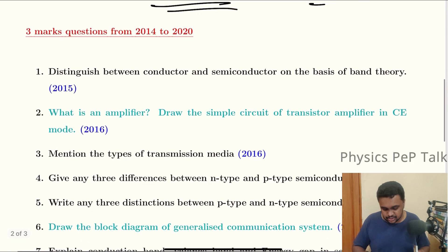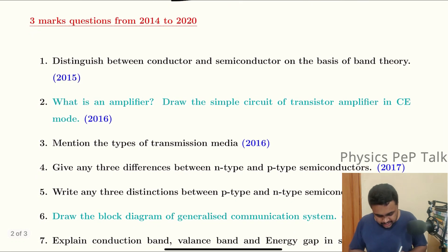Three marks question: Distinguish between conductors and semiconductors on the basis of band theory. Conductors: the valence band and conduction band are the same. The conduction band is completely filled at room temperature. Semiconductors: the valence band and conduction band are separated by an energy gap. At room temperature, some of the valence electrons go to the conduction band. This energy gap can be overcome by connecting to a small external source.